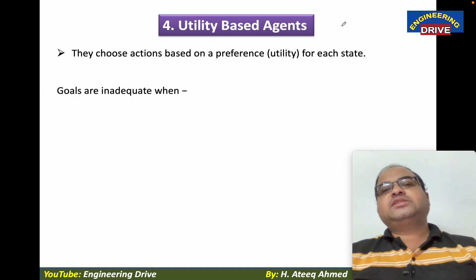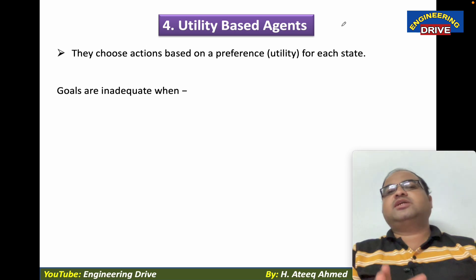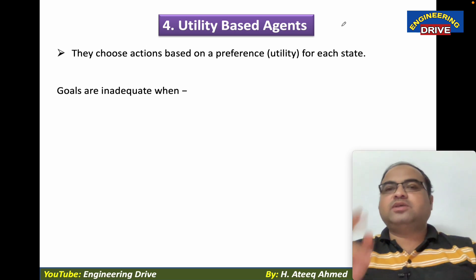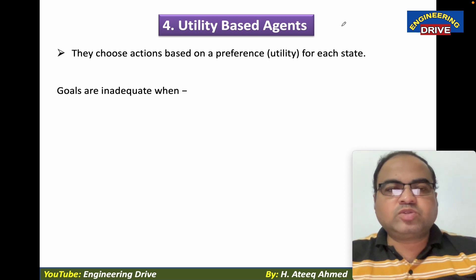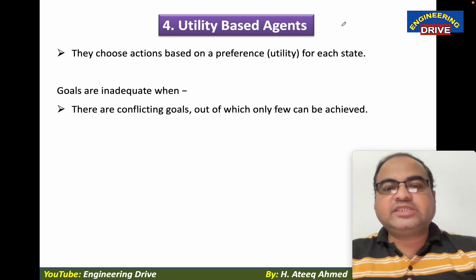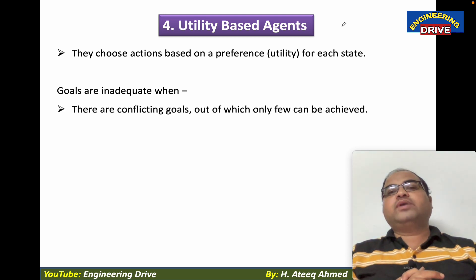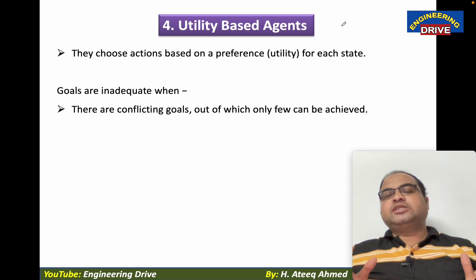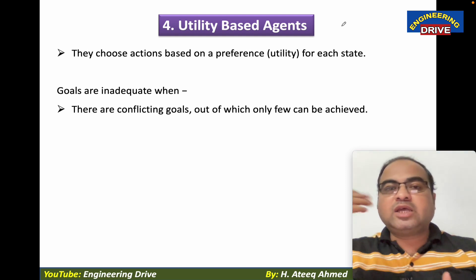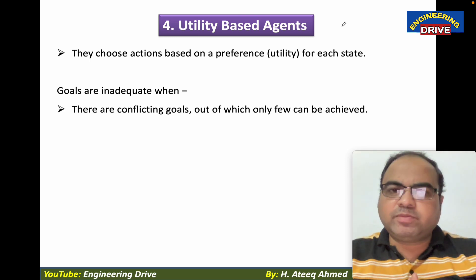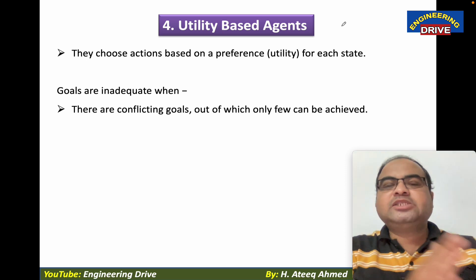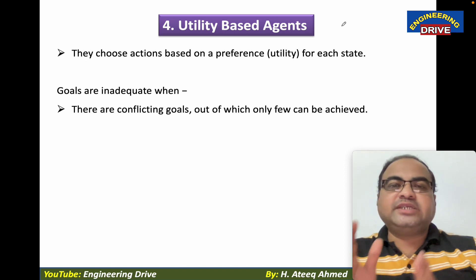Why are goal-based agents not considered to always have a high success rate? There are two problems. First: goals are inadequate when there are conflicting goals, out of which only a few can be achieved. Once the agent sets goals, there is no guarantee all goals will be achievable, and in those situations the actions will result in a lot of wastage of time.